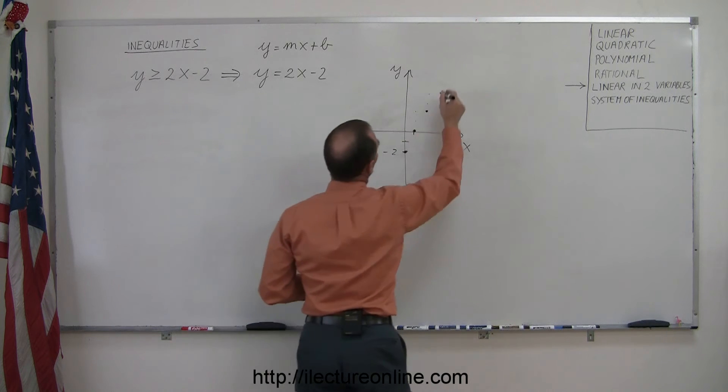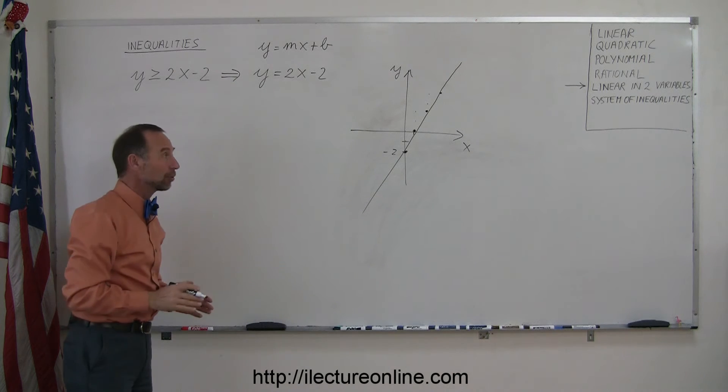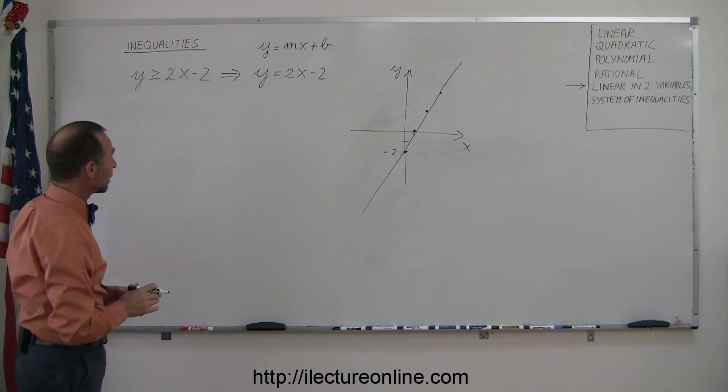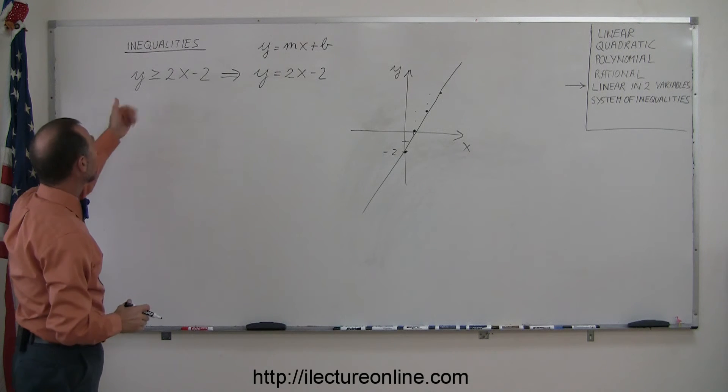You can see those points all lie on a straight line. When you draw a line straight across it, you now have the boundary of the region that satisfies and the region that does not satisfy the inequality.